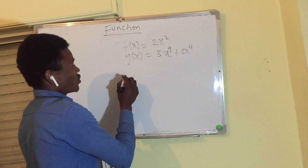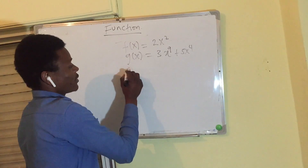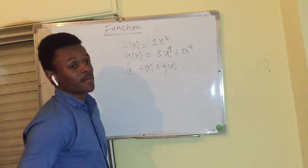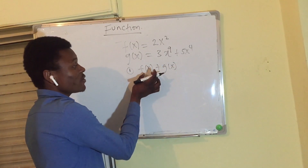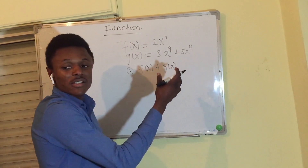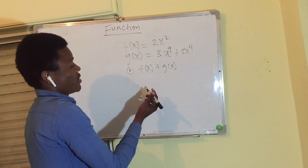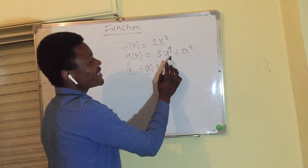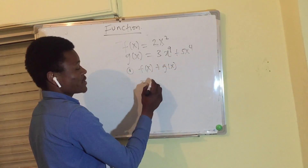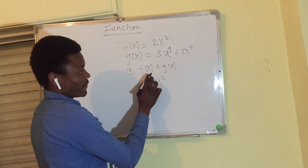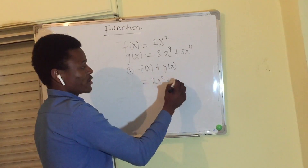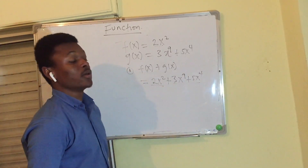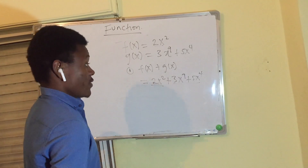Now let's look at operations on functions. For addition — f of x plus g of x — where f of x equals 2x squared and g of x equals 3x to the power of 9 plus 5x to the power of 4. We simply write f of x plus g of x as 2x squared plus 3x to the power of 9 plus 5x to the power of 4.